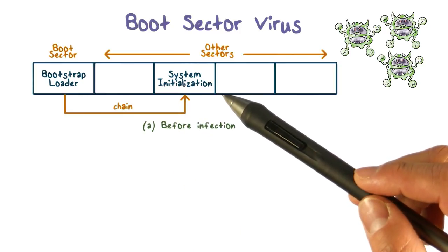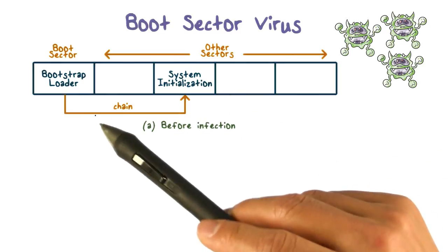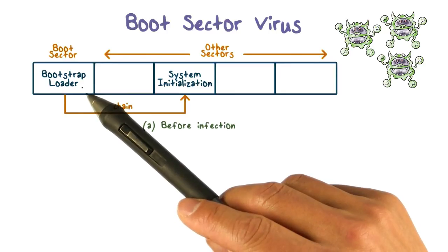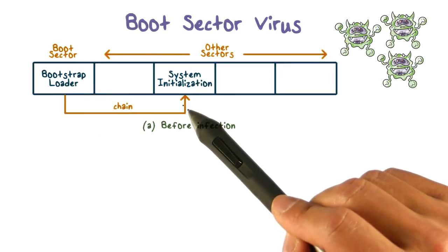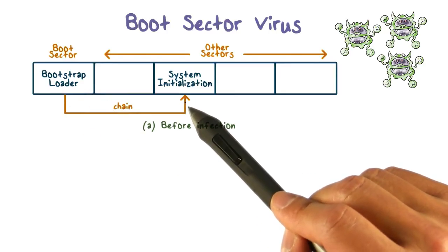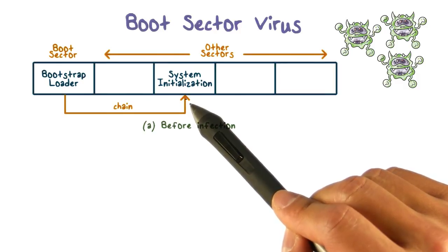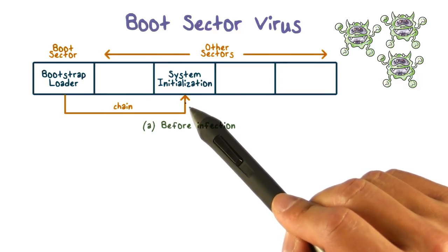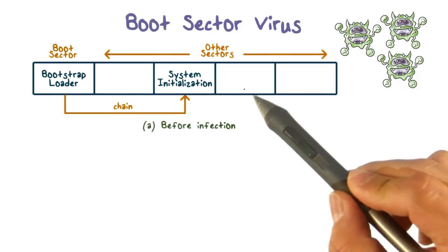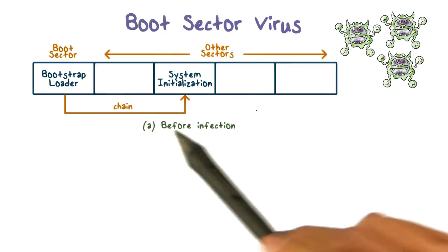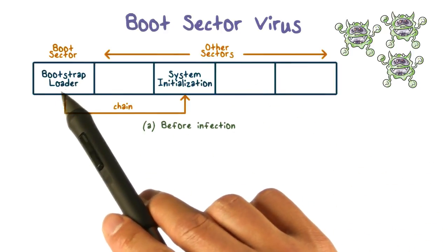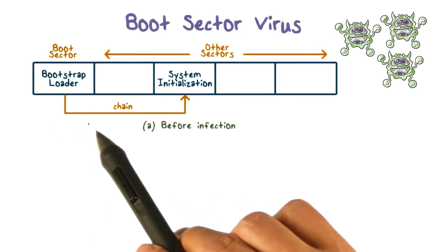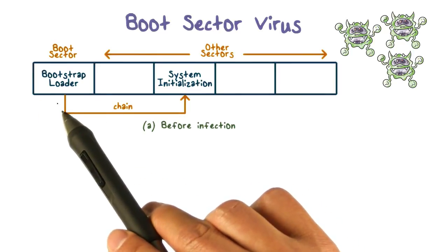The bootstrap loader may ask a user to choose an operating system from a list, and then loads that operating system. This is how a system boots from a hard drive — it starts with code in the boot sector, and then when the bootstrap loader runs, it loads the operating system.